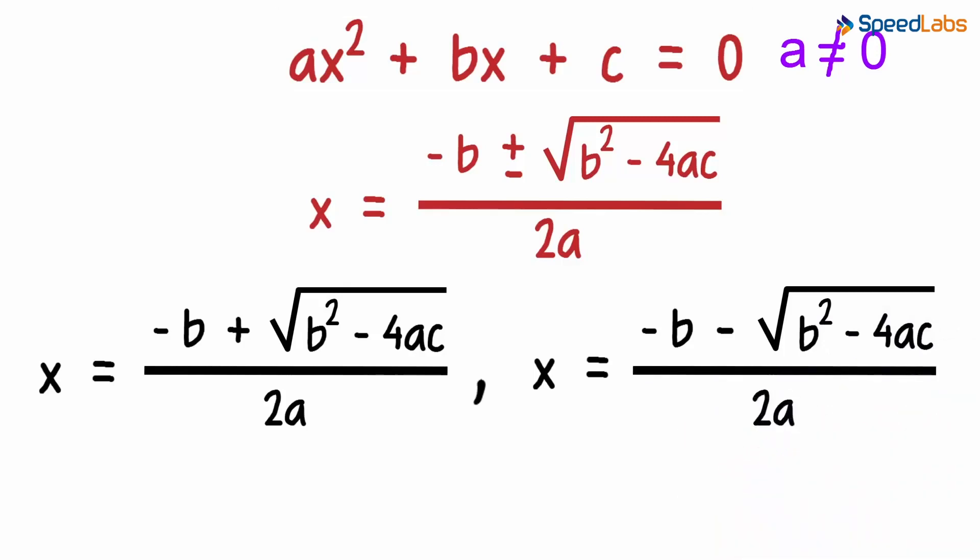Now the nature of the roots depends on one important value. And that value is under the square root sign. It's b squared minus 4ac. Why do I say this value is important? It's because this value decides the nature of the roots.